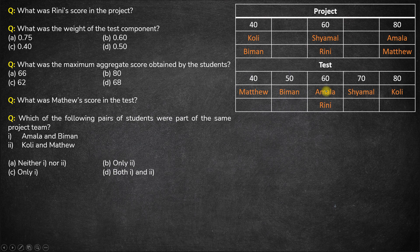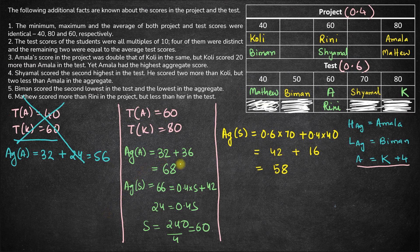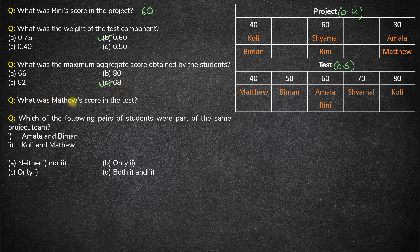Now let's answer the questions. First, what was Rini's score in the project? Rini's project score is 60. Next, what was the weight of the test component? The weight of test is 0.6 — option B. What was the maximum aggregate score? The maximum was obtained by Amla: 68 — option D. What was Matthew's score in the test? Matthew's test score is 40. Finally, which pair of students were part of the same project team? Amla and Biman are not in the same team; Kohli and Matthew are not in the same team — so option A, neither one nor two. That's it for this set, thank you.